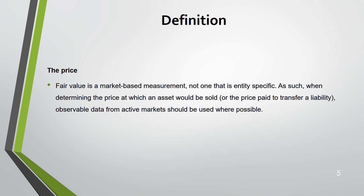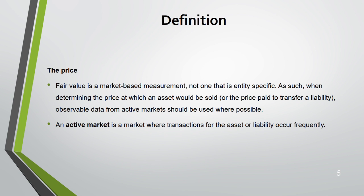The nature of fair value is that it is a market-based measurement, not entity-specific. The price does not change from entity to entity; it is based on the market. When determining the price at which an asset would be sold, you must use observable data from the active market. An active market is one where transactions for an asset or liability occur very frequently.